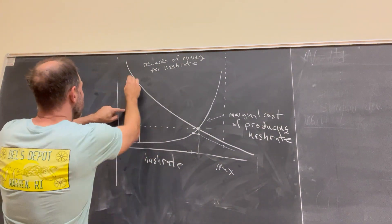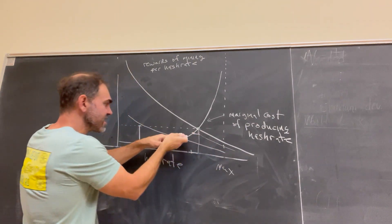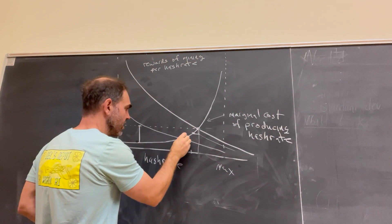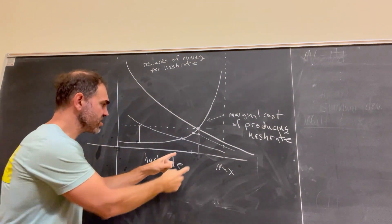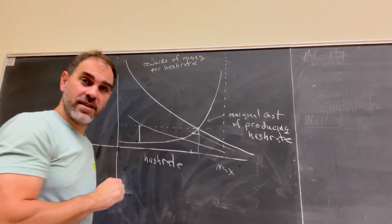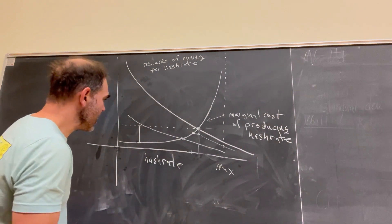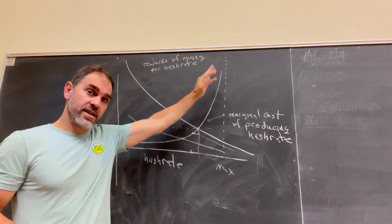Even a halving, right, you cut this curve in half. If this slope is steep, you're still only losing a little bit of hash rate, and you're only adding a little bit to the potential attacker's arsenal, right? So, as long as this slope is steep, you're good.